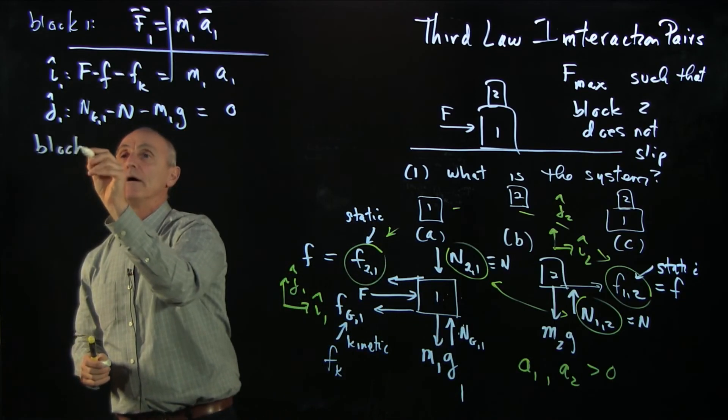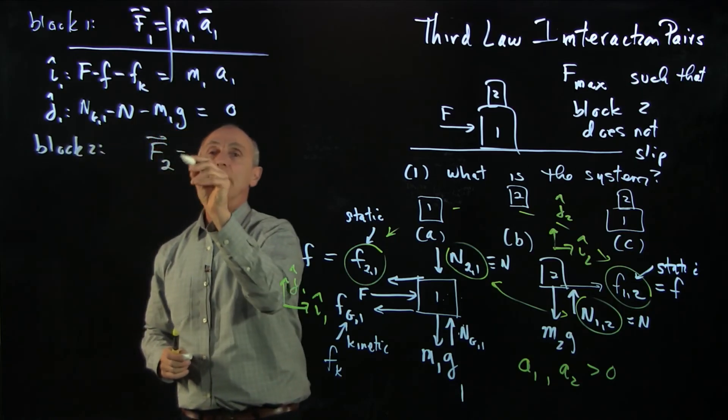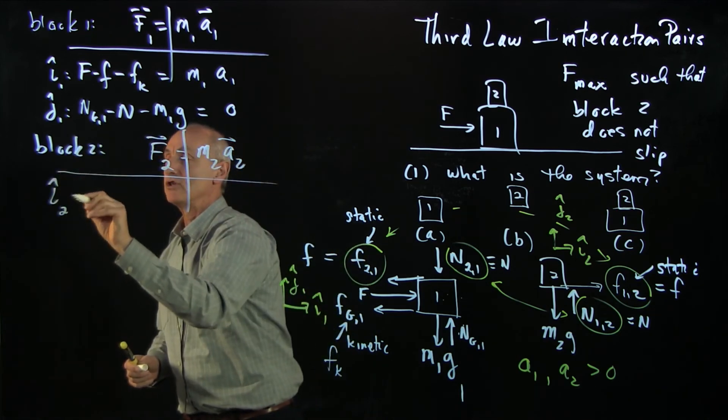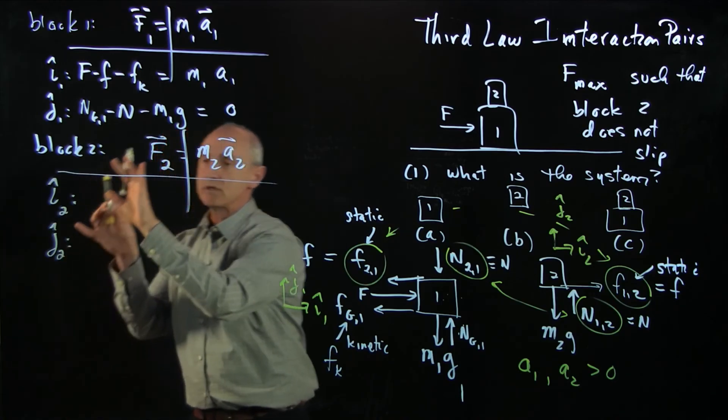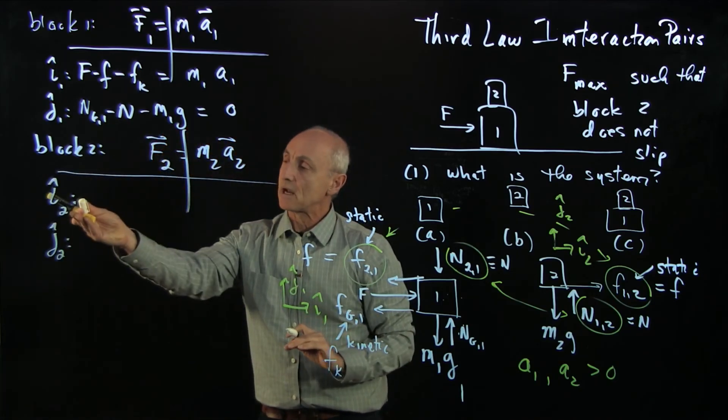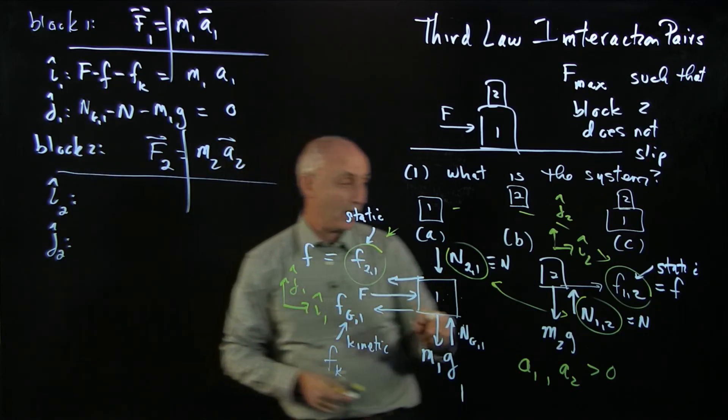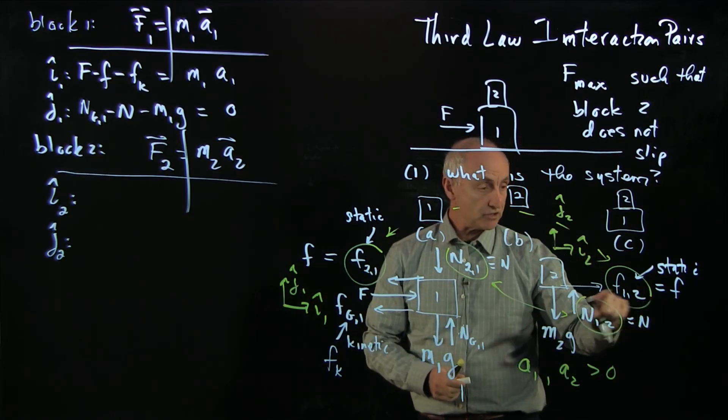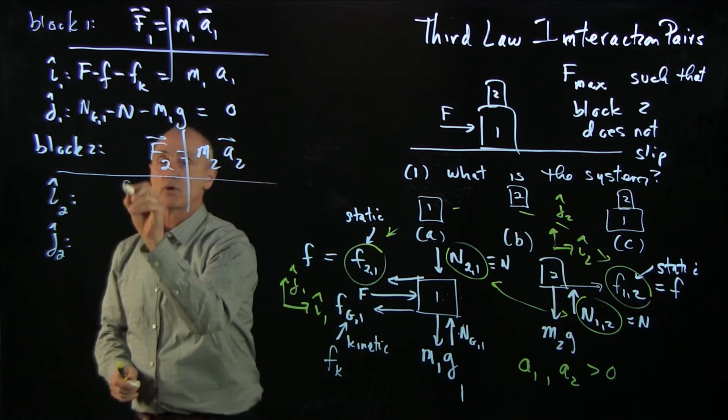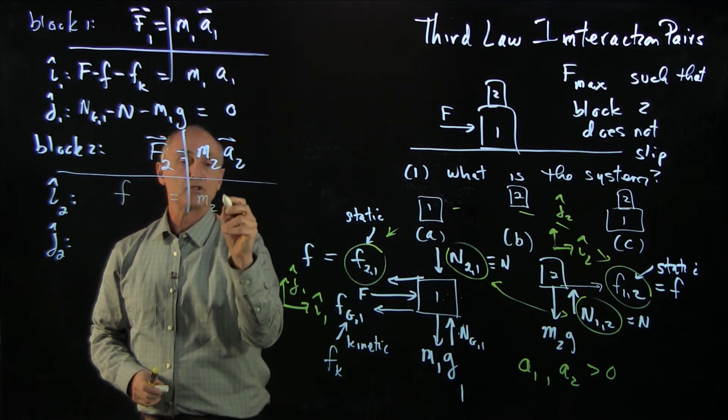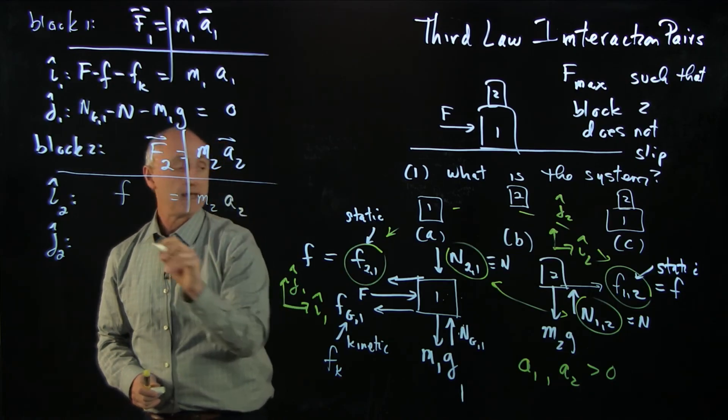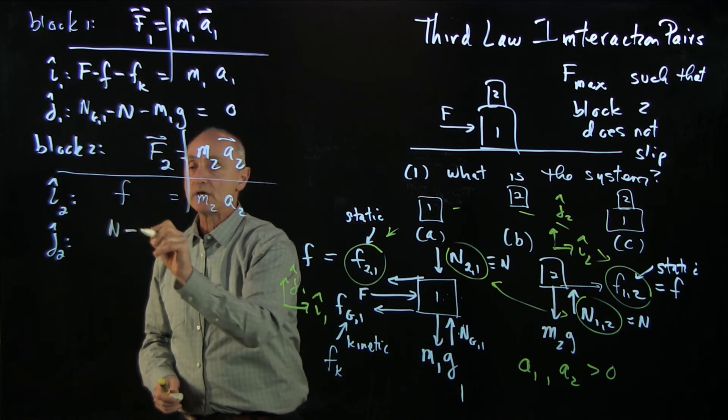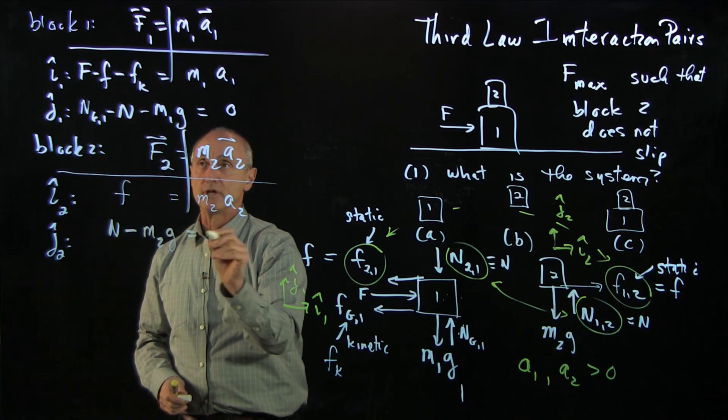Now, for block two, I'll apply the same analysis, f2 equals m2 a2. Separate out my two unit directions. Notice, even though these unit vectors are the same, I'm emphasizing that I'm talking about block two. I could have chosen different coordinate systems if I want. Now, I look at my free body diagrams on block two. I see that its static friction is the only one in the positive i hat direction. So I have f equals m2 a2. And in the vertical directions, I have that my force between the blocks, the normal force between the blocks, minus gravity is zero.